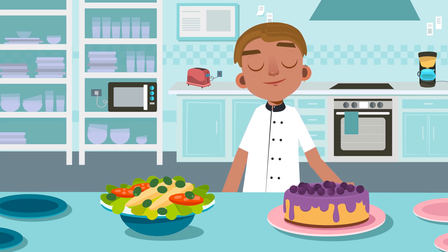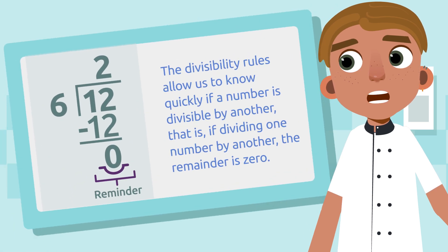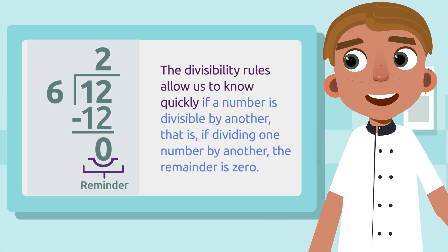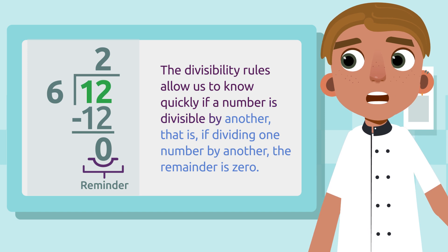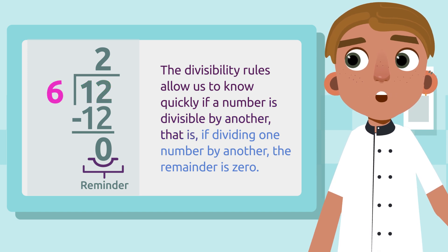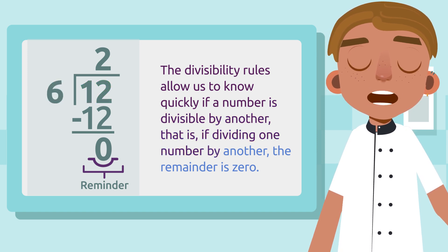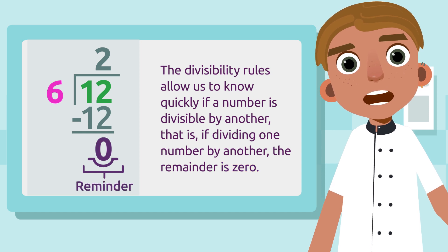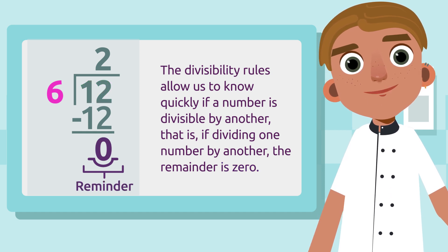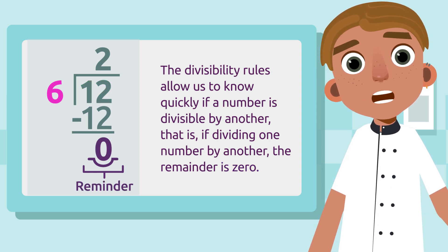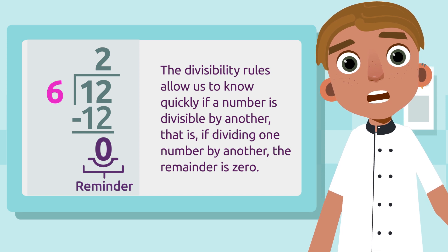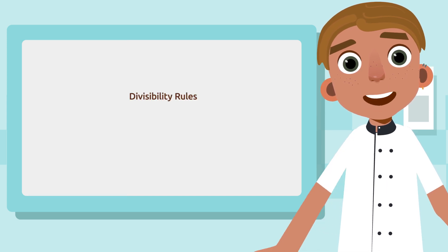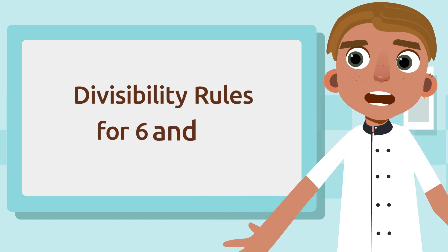The divisibility rules allow us to know quickly if a number is divisible by another — that is, if dividing one number by another the remainder is zero. When a number is divisible by another, the number we divided by is known as its divisor. Come on, I'll teach you the divisibility rules for six and twelve!